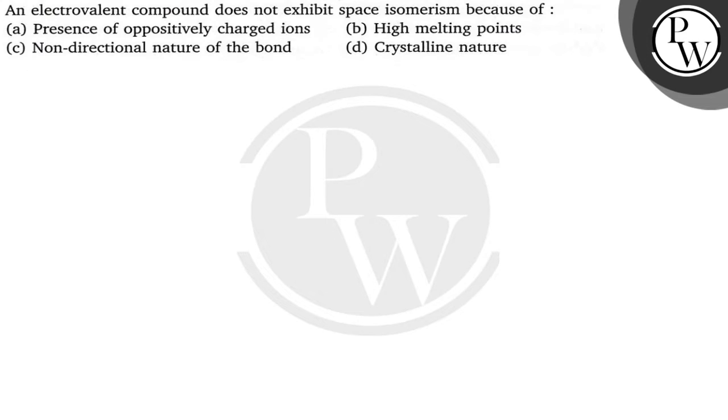Hello, let's read the question. The question says: an electrovalent compound does not exhibit space isomerism because of presence of oppositely charged ions, high melting points, non-directional nature of the bond, and crystalline nature.